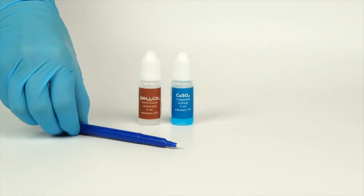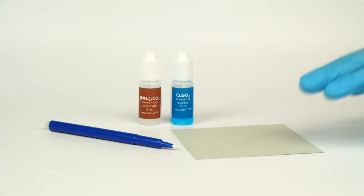For the invisible copper experiment, you will need solutions of copper sulfate and ammonium carbonate. Take an empty marker, a piece of paper, and a cotton absorbent from the experiment set. Take a disposable plastic cup from your starter kit.